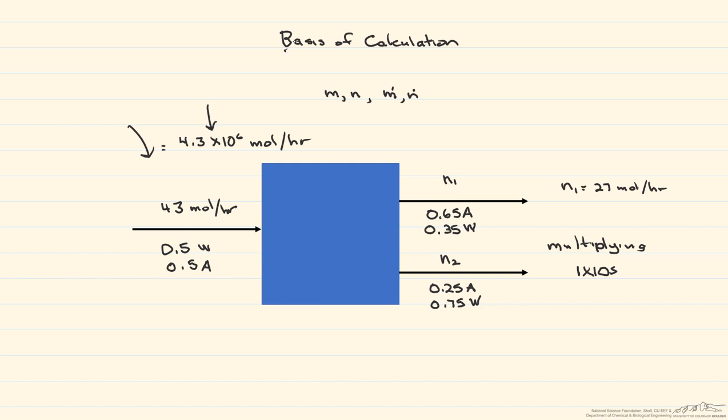Now let's look at a problem where we're not given any flow rates at all. Here you have to assume a basis to solve for the rest of the variables. However, you have to be very careful here, because if you assume a basis of 100 moles per second, you're gonna get different answers than if you assume, for example, 43 moles per second. Therefore, in order to assume a basis is when you are solving, for example, for a ratio.